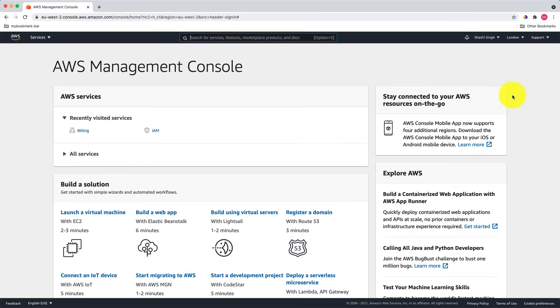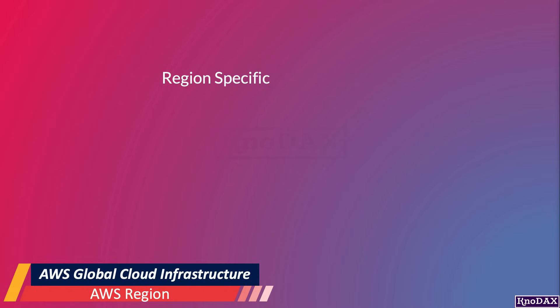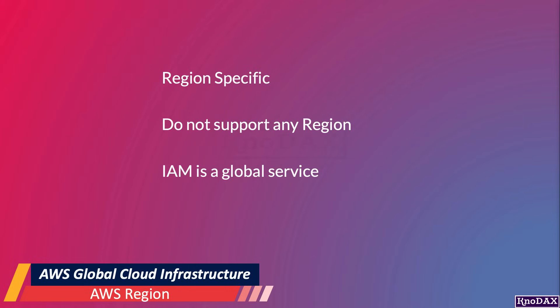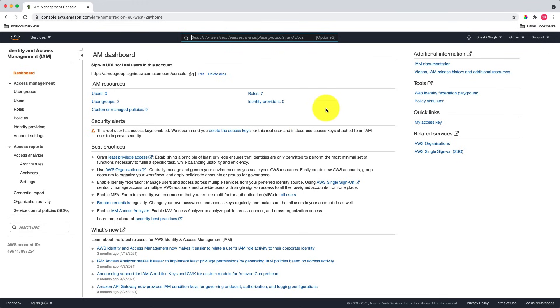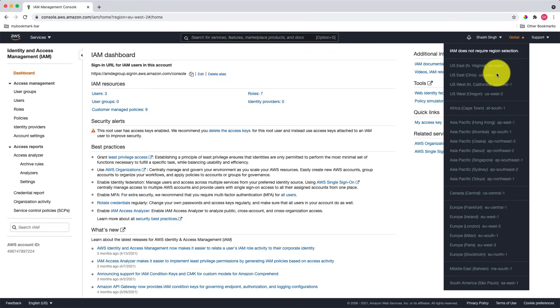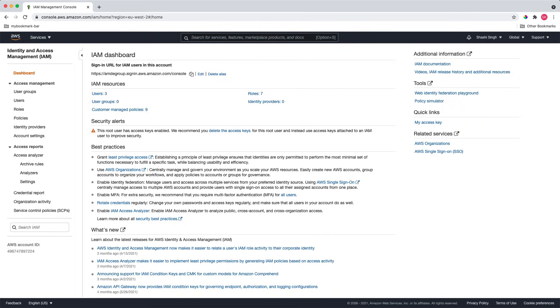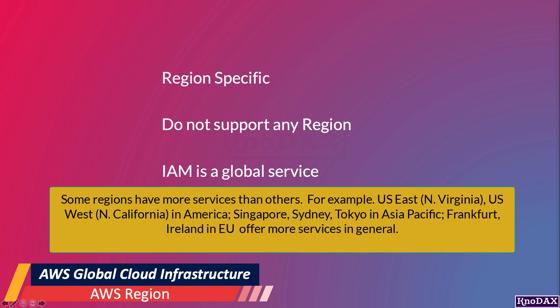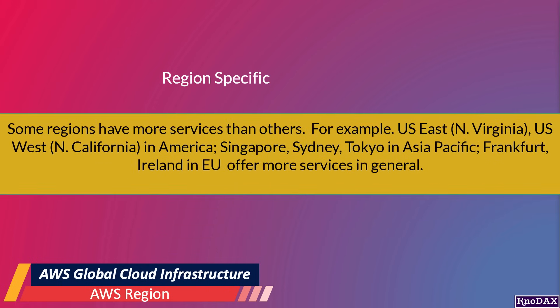AWS services are region-specific. However, some services do not support any region — for instance, AWS IAM is a global service not associated with any region. As you can see in the IAM dashboard, IAM is not assigned to any particular region. Some regions have more services than others; for example, the US East, US West, Singapore, Sydney, Tokyo, Frankfurt, and Ireland AWS regions offer more services than others.